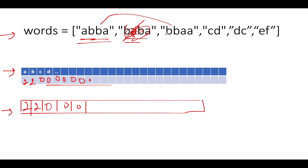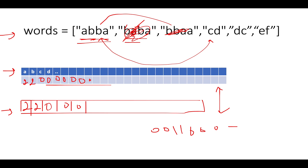Next, we compare 'aabb' with 'cd'. The anagram string for 'cd' is [0, 0, 1, 1, 0, ...], which is not equal to the anagram string of 'aabb'. Therefore, we add 'aabb' to our output string. We also update the base comparison string from 'aabb' to 'cd' for the next comparison.